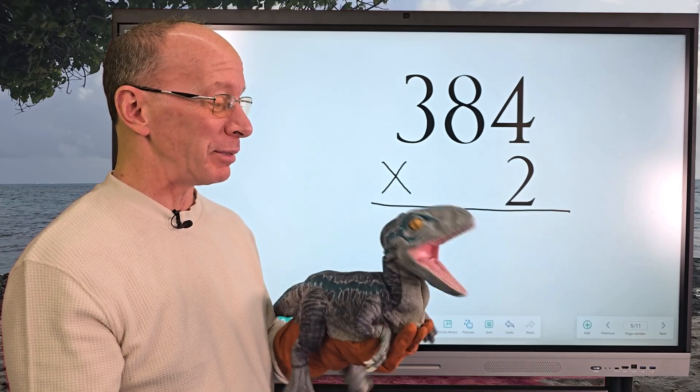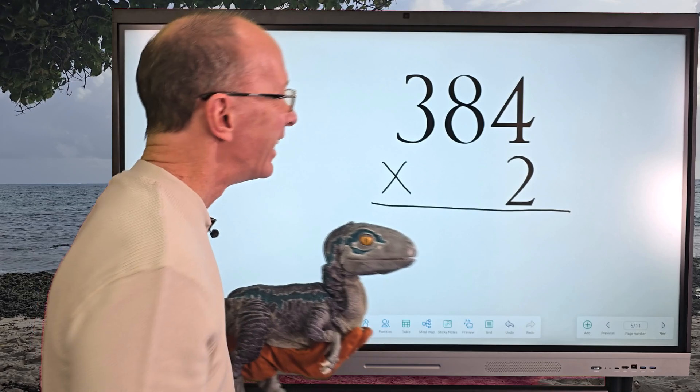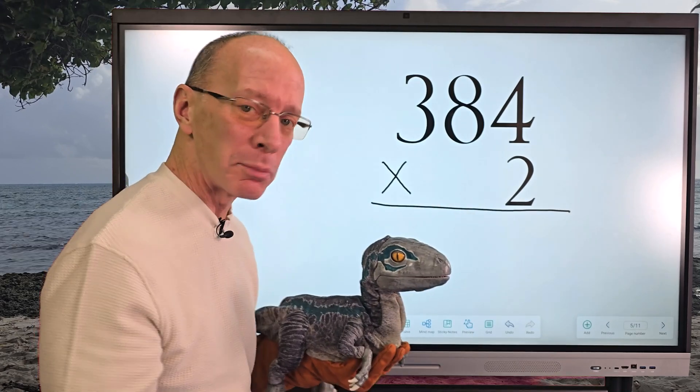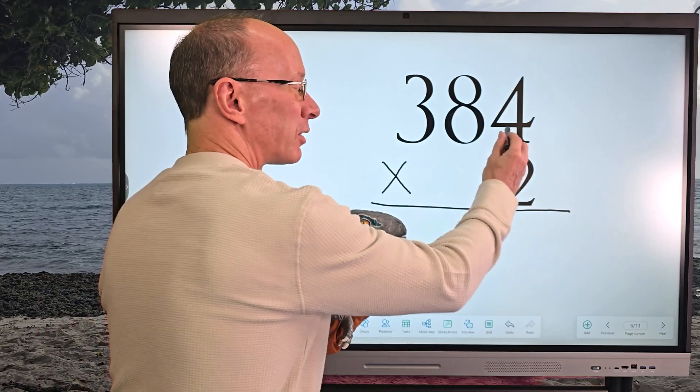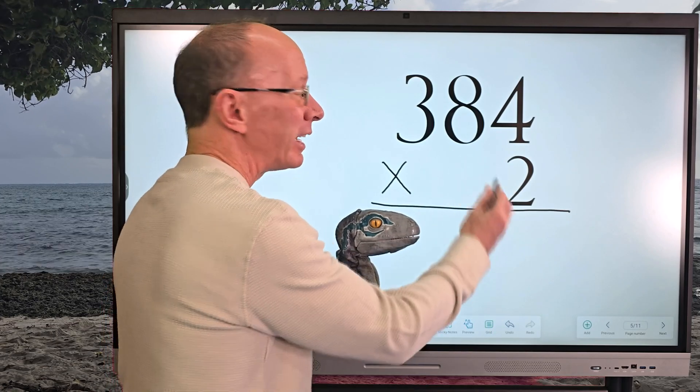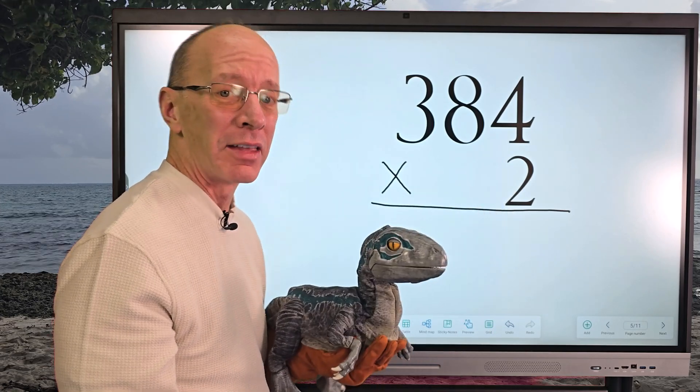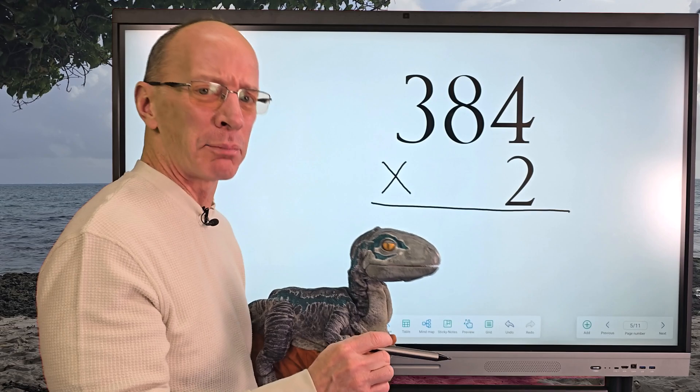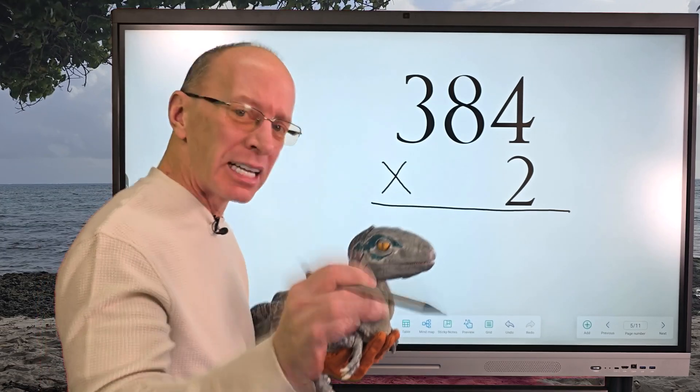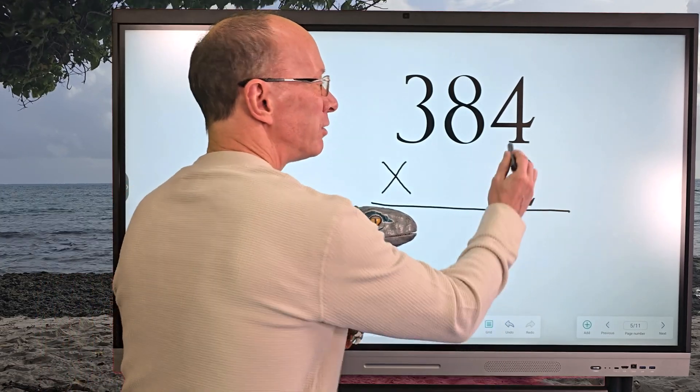Just hit the like button down there. If we can get 100 likes on this video, oh, little raptor is going to be so excited! All right, so let's begin. When we multiply, we're going to take the two times the four, then the two times the eight, and then the two times the three. Don't worry, we're going to take it step by step, easy cheesy lemon squeezy. So let's take two times four.